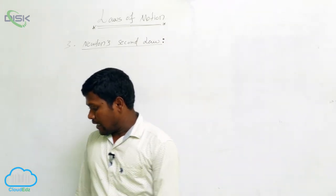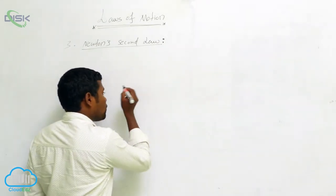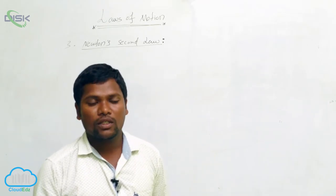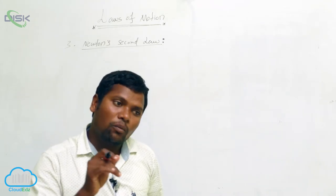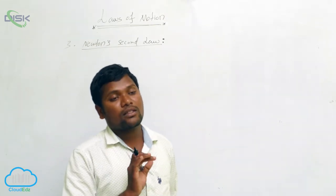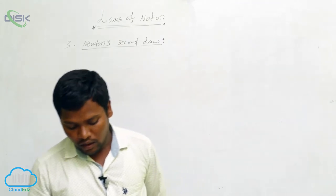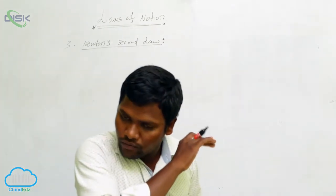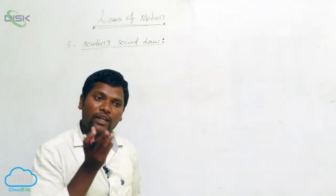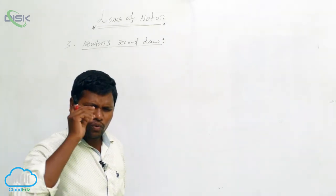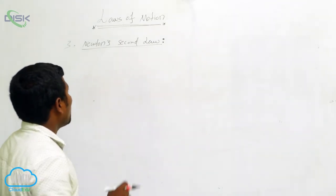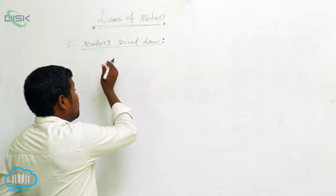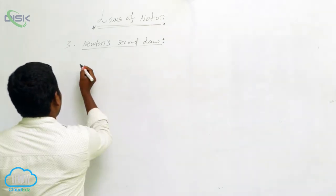Now, Newton's second law. If an object wants to move, you need to apply some force. Without applying force, no object will move automatically. There is no chance in this world for any object to move without an external force — whether that is nuclear force, human force, gravitational force, or electrostatic force. Anything that wants to move needs some force.